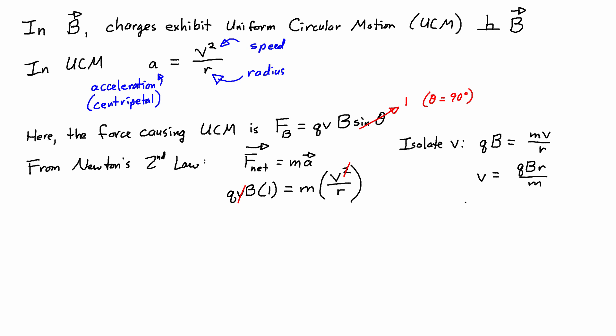And I can write that really explicitly as q times B over m as a constant, because both charges have the same charge q, both charges are in the same magnetic field B, both charges have the same mass m. So qB over m is a constant that doesn't change for the two charges. What does change is the radius r. So v in this case is actually proportional to the radius.